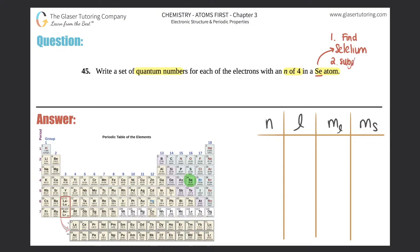Step number two: we have to know what subshells selenium has in n equals four, because they're giving us the parameter that n must equal four. This is something new — we haven't used the periodic table for electron configuration yet. Just know that the periodic table is divided into different subshells. For electron configuration, we actually move helium over next to hydrogen because it makes it easier to get the electron configuration correct.